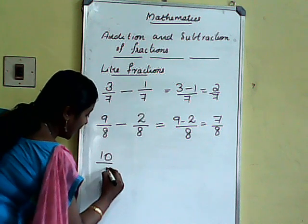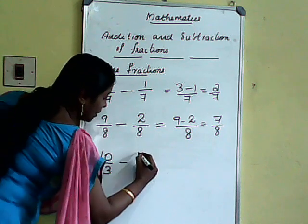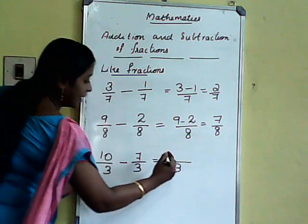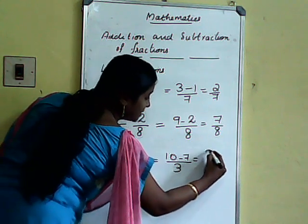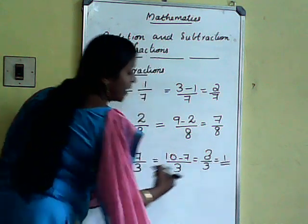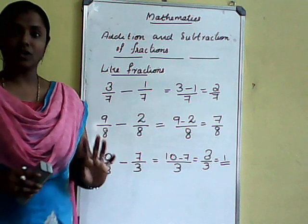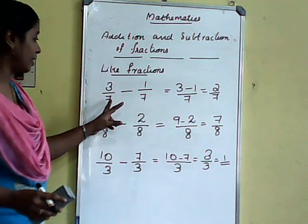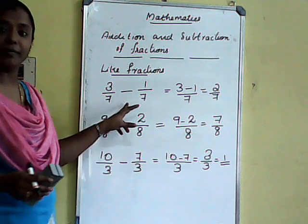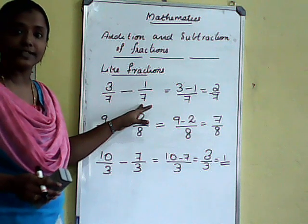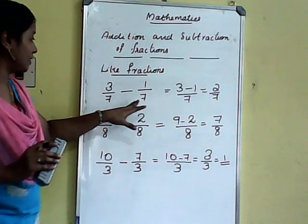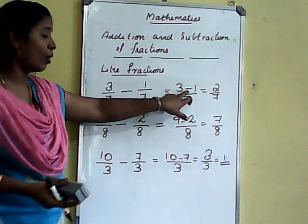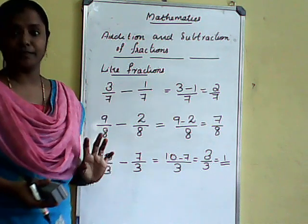One more example: 10 by 3 minus 7 by 3. Here denominator is 3, and the numerator gives 10 minus 7, which is 3 by 3 — what will we get? 1. That is the method for like fractions. We put the same denominator and do the operations — whatever addition or subtraction — only in the numerator.